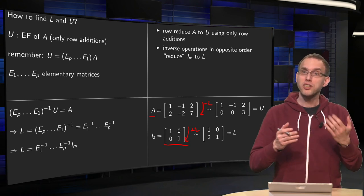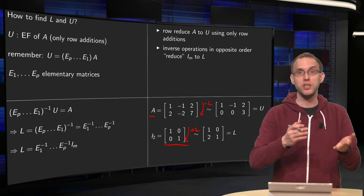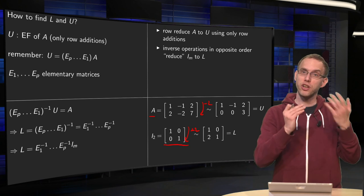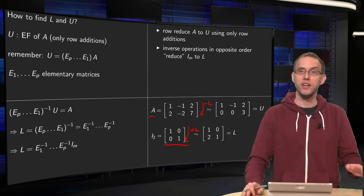You see, actually it is not so difficult to find L and U. You only have to be able to reduce A to U. And then you start with your identity matrix, and with similar operations you find your L.